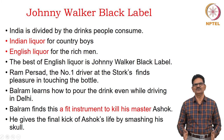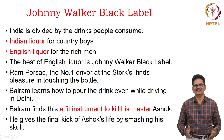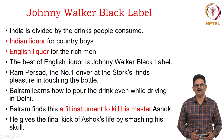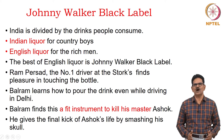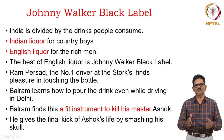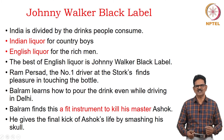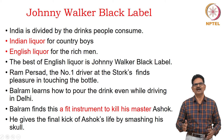A very interesting case is the symbol of Johnny Walker Black Label. India is divided by the drinks people consume — there are two kinds: Indian liquor for country boys like Balram Halwai, and English liquor for rich people like Ashok, Mukesh, and the Stork. The best of English liquor is Johnny Walker Black Label. Ram Prasad, the number one driver at the Stork's house in Dunbar, finds pleasure in just touching the bottle. Balram learns how to pour the drink while driving in Delhi — considered a supreme skill for a driver. Balram later finds this a fitting instrument to kill his master Ashok at the end of the novel.